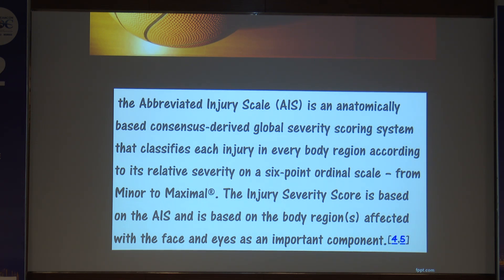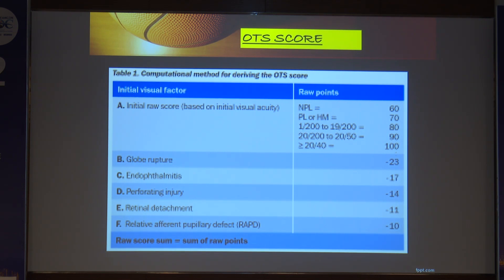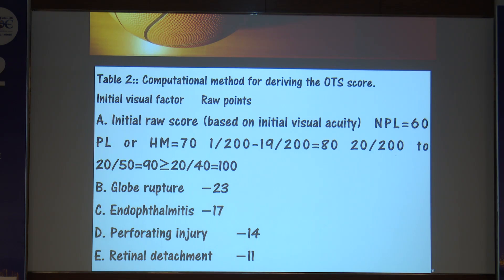In the OTS scoring system, raw points are assigned based on initial vision: no light perception scores 60, light perception or hand movements scores 70, and vision of 20/40 scores 100. Penalties are then applied: globe rupture is minus 23, endophthalmitis is minus 17, perforating injury is minus 14, retinal detachment is minus 11, and relative afferent pupillary defect (RAPD) is minus 10. The sum of raw points indicates the likely visual outcome after repair.